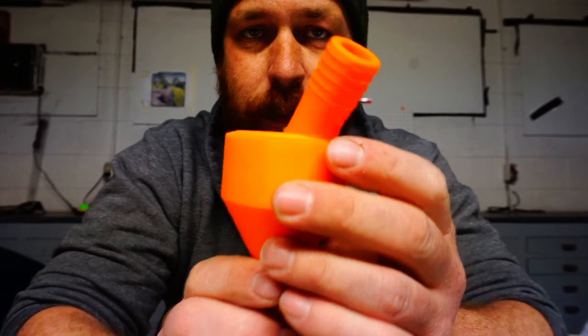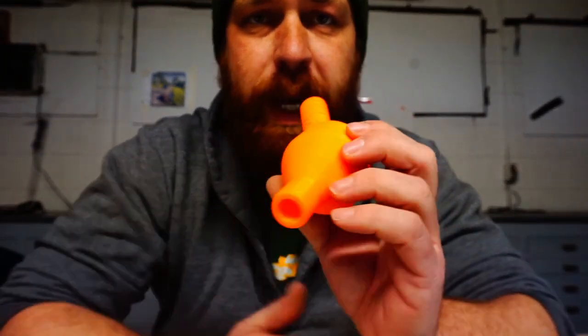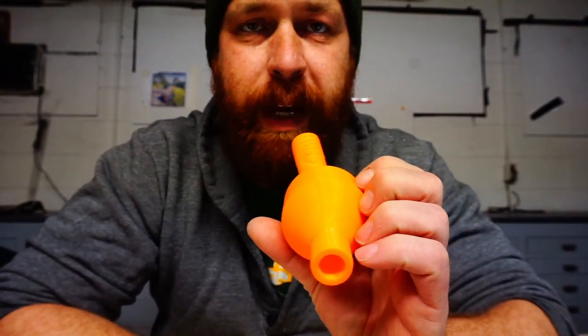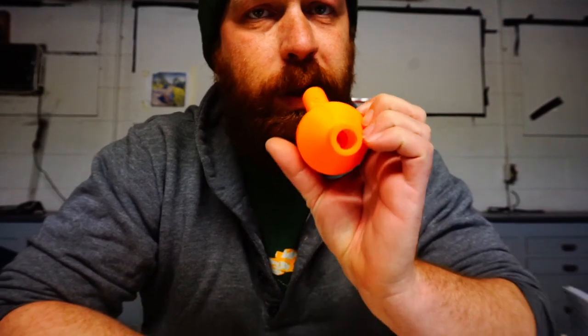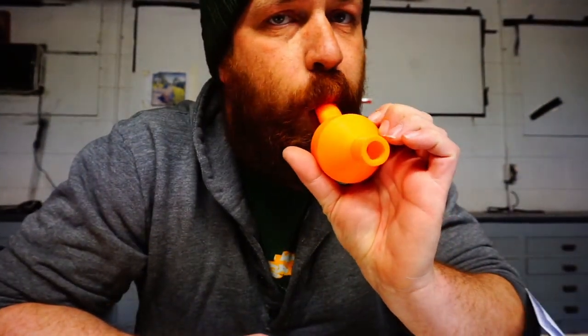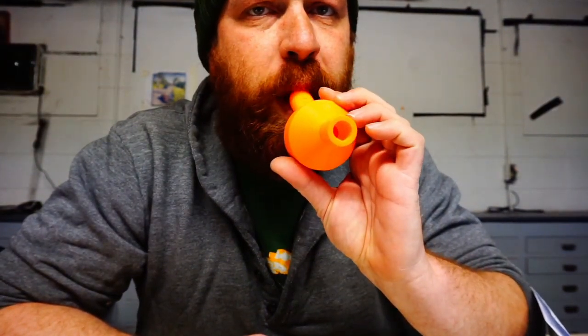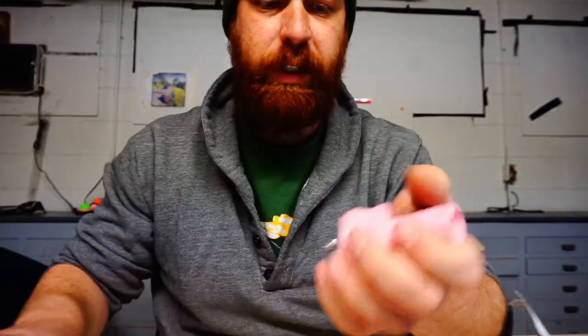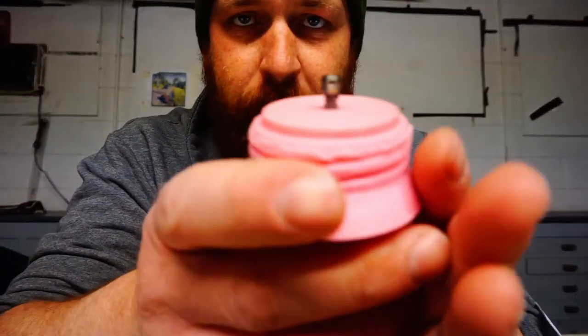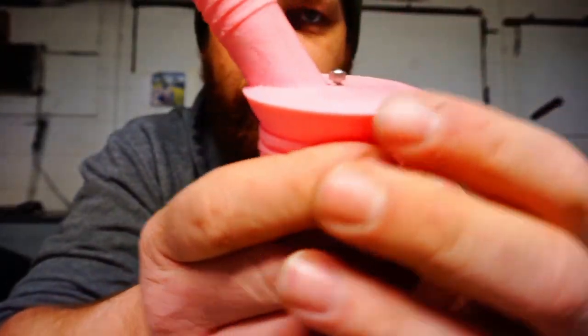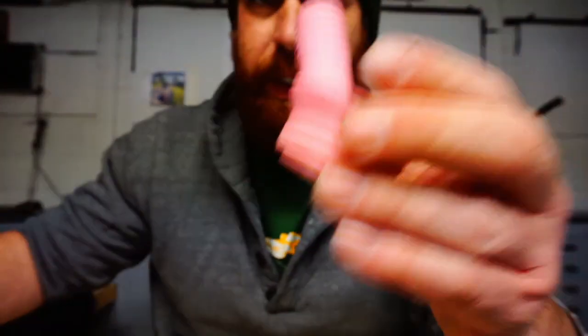Now on to the PEEP valve that I made. So this valve will allow you to exhale, but at a certain low pressure it will close. So at a very low pressure, it is closed. At a higher pressure, you can blow through it with some resistance. The mechanism that it's using, here's an earlier bad prototype, is this top piece.